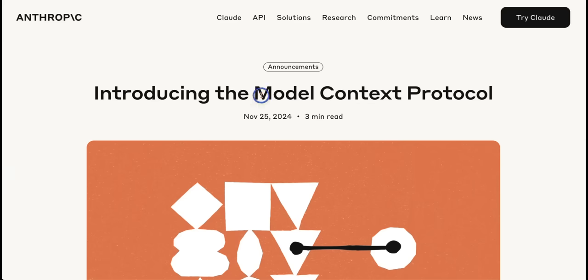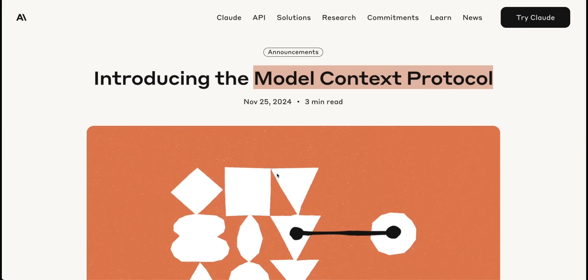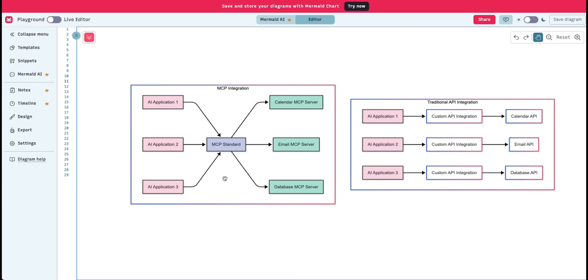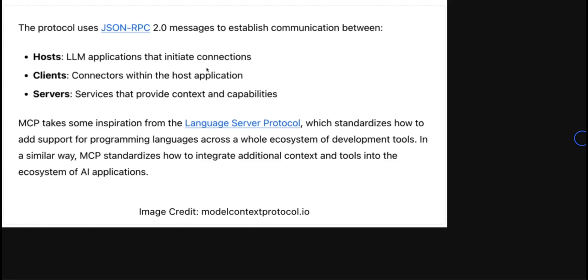This is where the model context protocol or MCP comes into play. The idea is that you want to standardize the interaction between your tools and the LLM. We put another custom layer or standardization layer in the middle between your AI application, which could be an LLM or an agent and the actual tool implementation. Irrespective if you update your tool, the MCP standard or this standardization layer is going to remain the same.